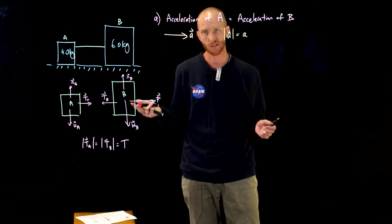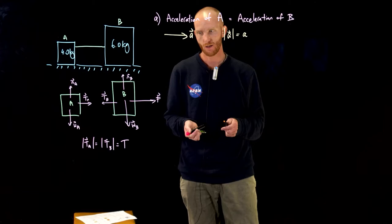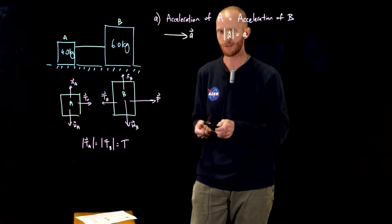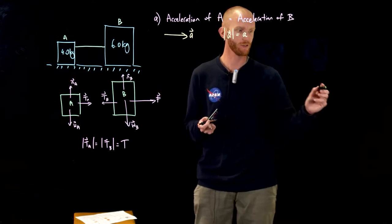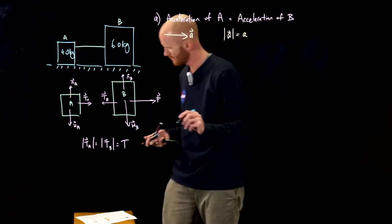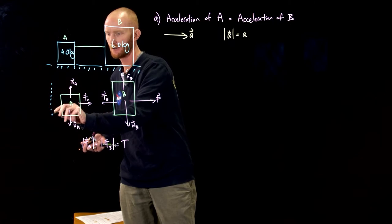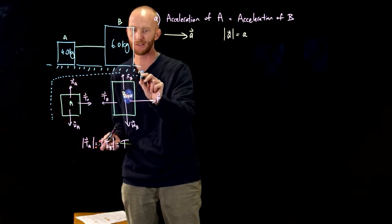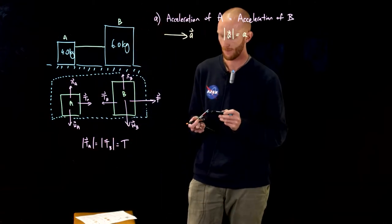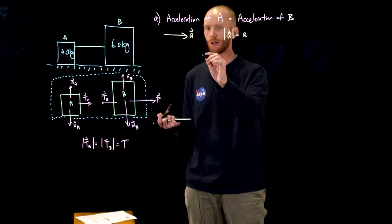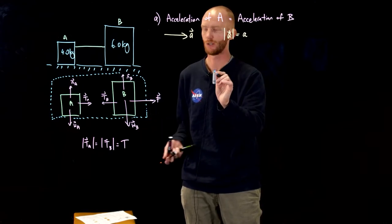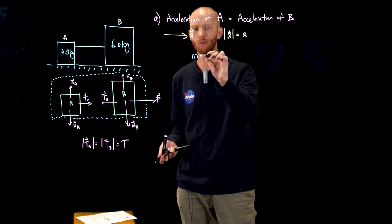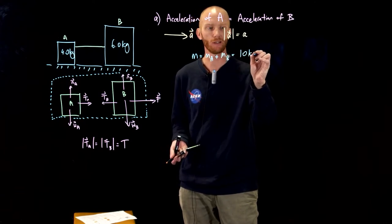So I'll do it the short way because that's the fun way, and that's to consider the whole thing as a black box. So imagine that this person didn't know what was inside this kind of magical shroud that I'm now placing over the boxes but they knew that they were pulling on something with a force F. So the total mass is equal to MA plus MB. That's equal to 10 kilograms.